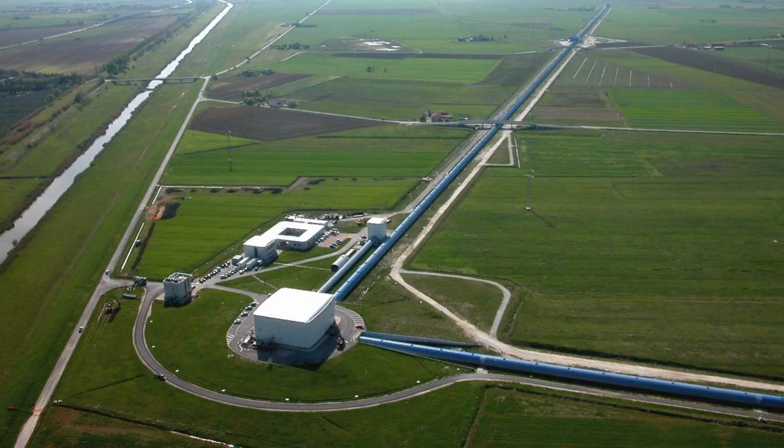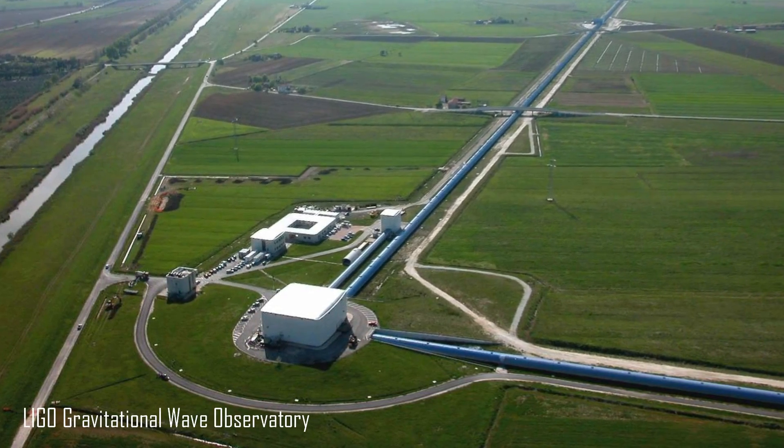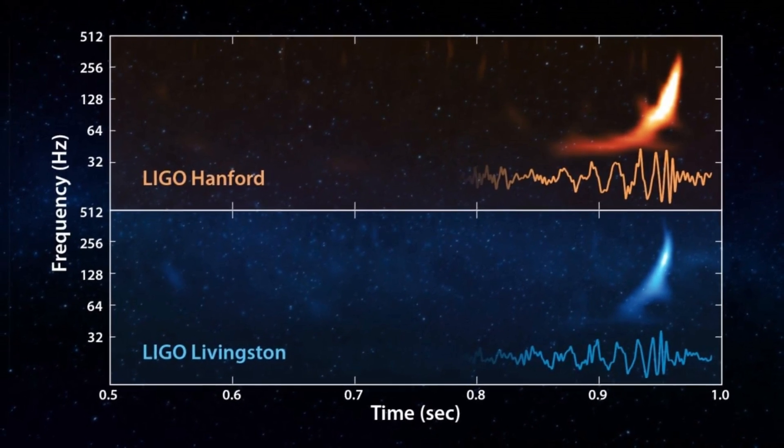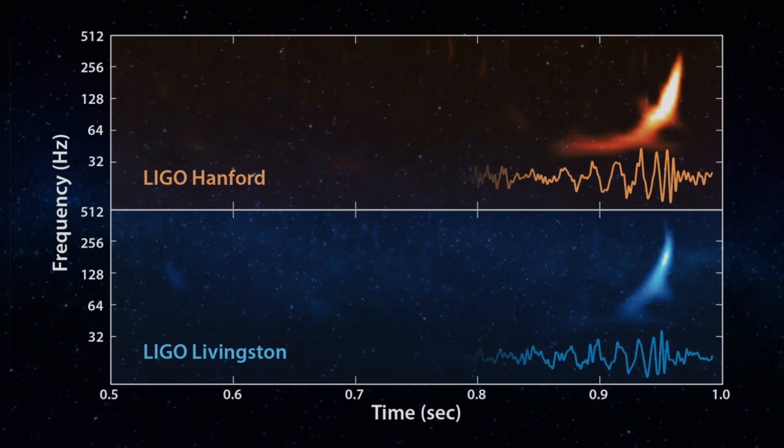The first ever detection of these kinds of waves was made on 14th September 2015 by the LIGO gravitational wave observatory. The signal that was detected was consistent with theoretical predictions for the gravitational waves produced by the merger of two black holes. So even though there has been indirect detections of black holes, no one has actually seen it until now.